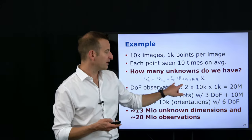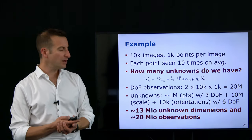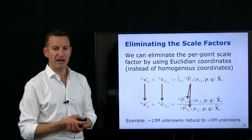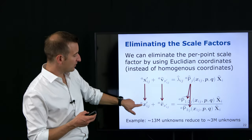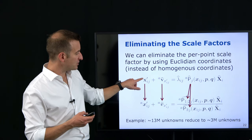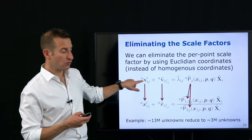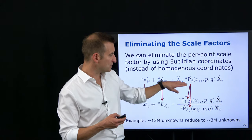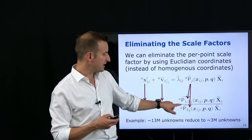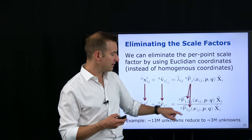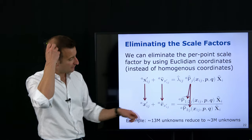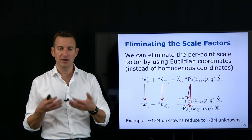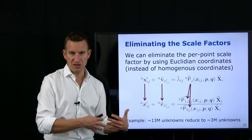Having reduced my unknowns from 13 million to approximately 3 million is a big gain. In this example I have 3 million unknowns and 20 million observations, still a very large system to construct. From a theoretical point of view, my standard procedure starts: setting up my system of linear equations, or the normal equation system in the least squares sense, with unknowns x and observations l — using standard notation from the least squares estimation community.